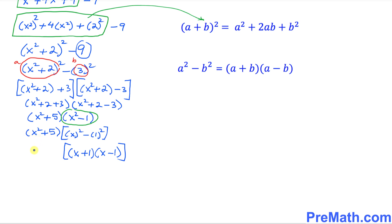So far so good. And then x square plus 5 was just outside. So here are our complete factors. x square plus 5 times x plus 1 times x minus 1. And that is our answer.